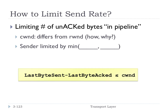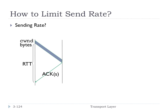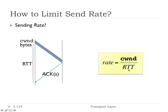The receive window is a variable TCP keeps to know how many bytes the receiver can receive based on available buffer space. If we send out CWND bytes over one round trip time, then our sending rate in bytes per second is essentially the congestion window divided by the round trip time. So by controlling the congestion window size, we control the rate. We're assuming the round trip time doesn't change a lot.